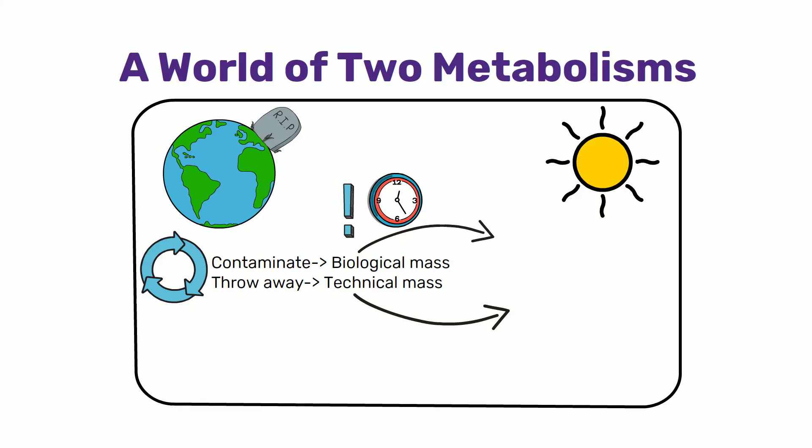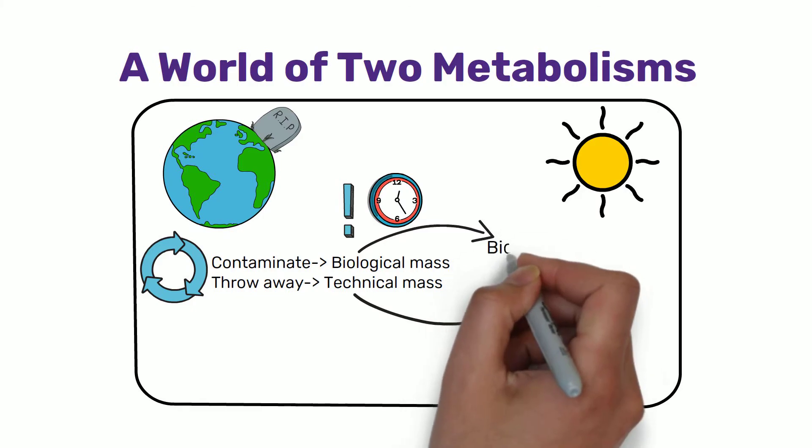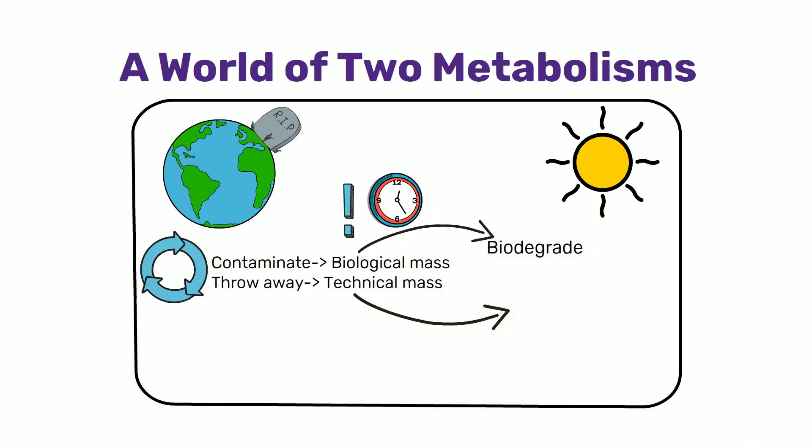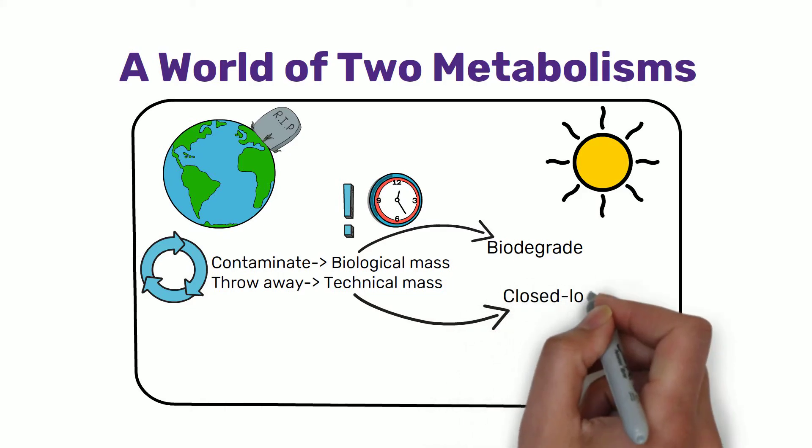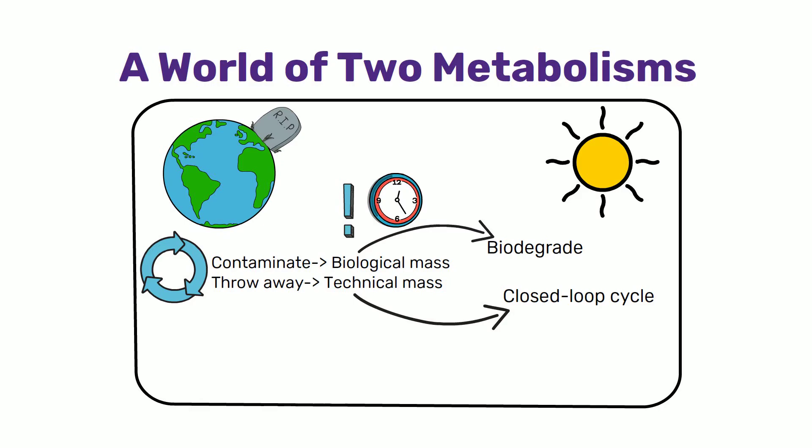Products can be composed either of materials that biodegrade and become food for biological cycles, or of technical materials that stay in a closed loop of technical cycles, in which they continually circulate as valuable nutrients for industry. In order for these two metabolisms to remain healthy, valuable, and successful, great care must be taken to avoid contaminating one with the other.